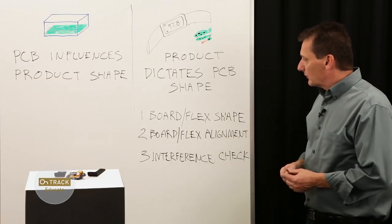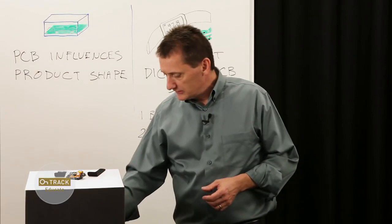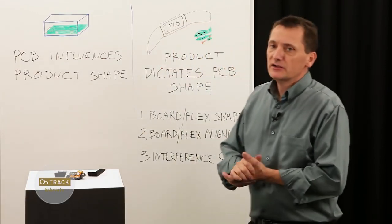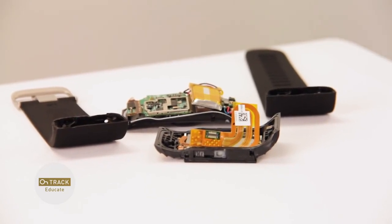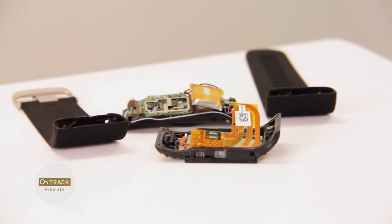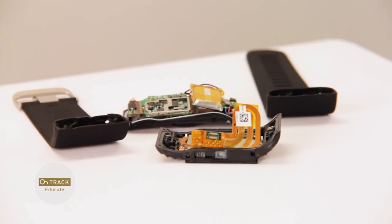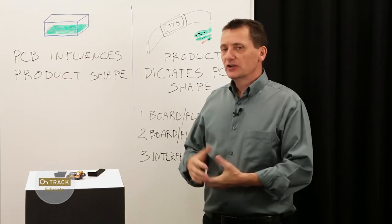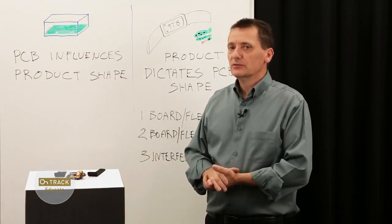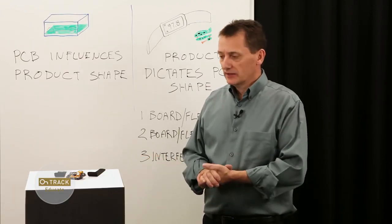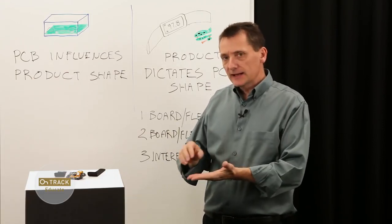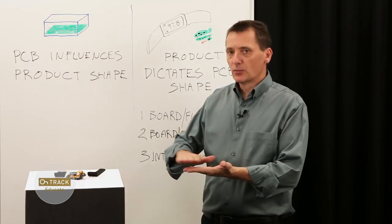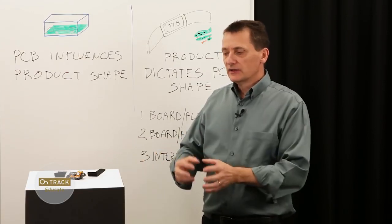These two problems can be solved by borrowing heavily from the MCAD domain. When a product such as this is designed, there's a mechanical team which undoubtedly would start out with the overall form of the product. The information they produce can be borrowed and brought into the electrical design domain. So their assembly, the top and bottom piece, and their modeling of the bare boards within the assembly can be leveraged.